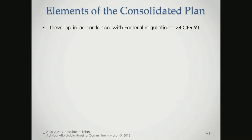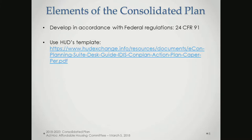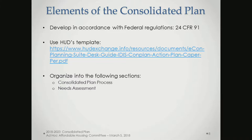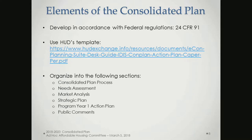We develop this plan in accordance with HUD regulations. We try to make it as user-friendly as possible, especially when it's out for public review and comment. It's organized into sections: we describe the process including our public input process, a needs assessment, market analysis, a strategic plan, and finally an action plan for the first year — June 2018 through May 2019 — that tells how we'll program the federal funds, including the block grant money.